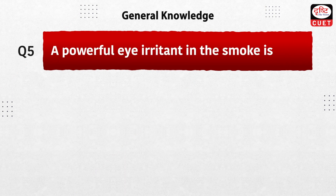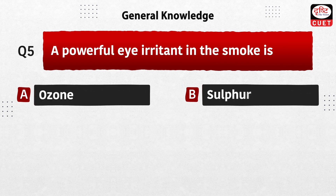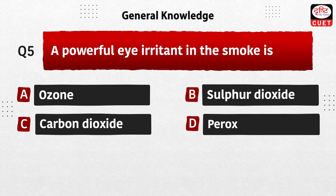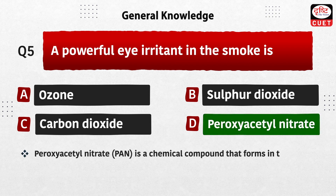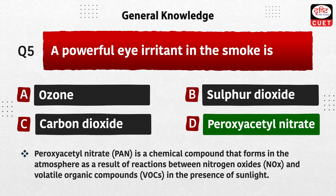Now moving on to the next question: a powerful eye irritant in smog is — ozone, sulfur dioxide, carbon dioxide, or peroxy acetyl nitrate? The correct answer is option D, peroxy acetyl nitrate. Peroxy acetyl nitrate is a chemical compound that forms in the atmosphere as a result of reactions between nitrogen oxides and volatile organic compounds in the presence of sunlight.